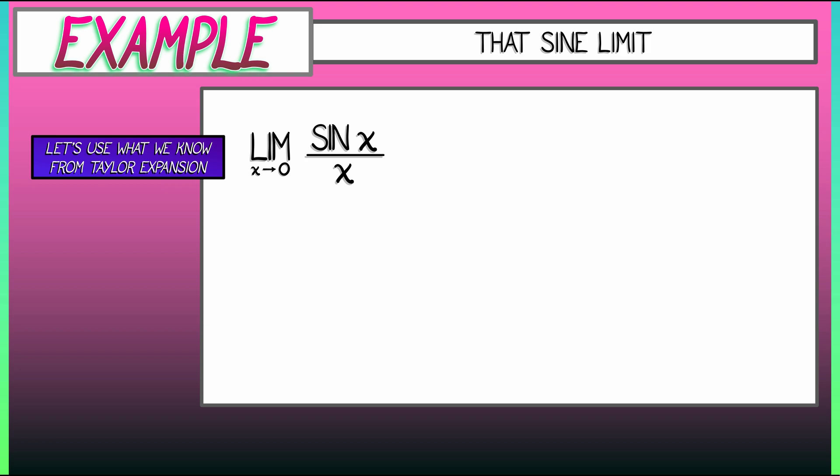We know what sine of x is about zero. I can replace that numerator with x minus x cubed over 3 factorial plus x to the fifth over 5 factorial. What do we notice?